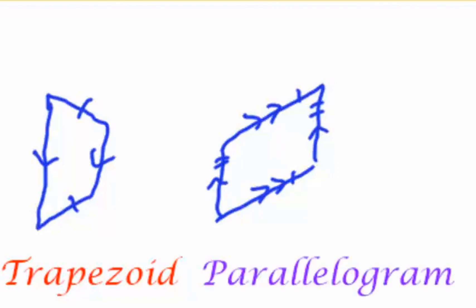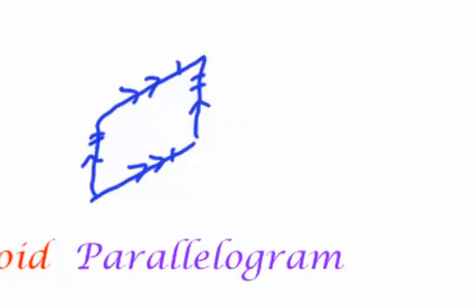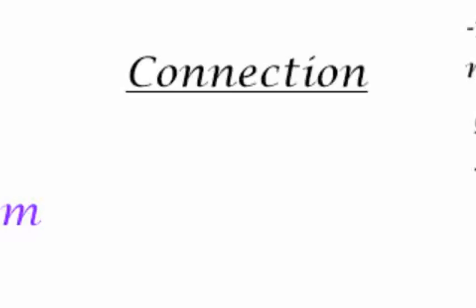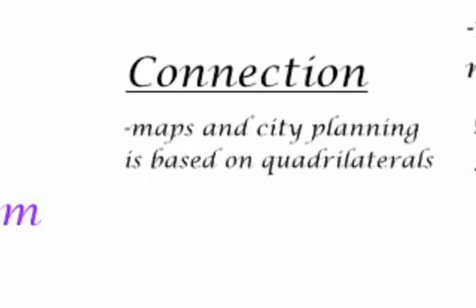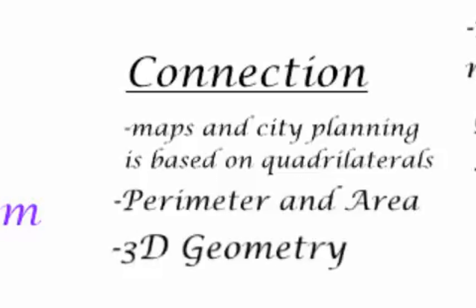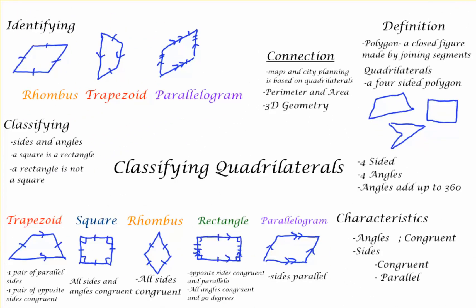The connection with quadrilaterals is a strong one. Maps and city planning is based on quadrilaterals. We also know that perimeter and area largely depends on those four-sided shapes, and that 3D geometry is consistently made up of quadrilaterals.